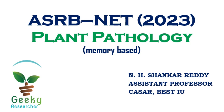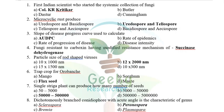My name is Janet Shankar Ready and I'm working as a student professor at Kasar. The first question: the first Indian scientist who started the systematic collection of fungi is K.R. Critiquer, in 1885. E.J. Butler is considered the father of plant pathology in India. Don't confuse Critiquer with Cunningham — Critiquer started systematic collection of fungi in 1885, whereas Cunningham started working in 1889.